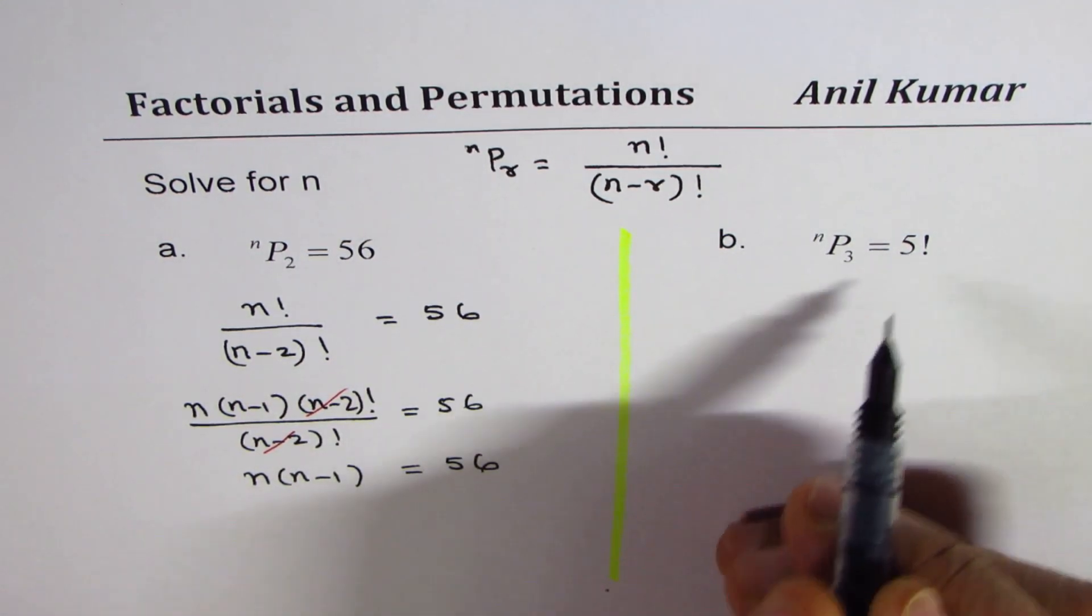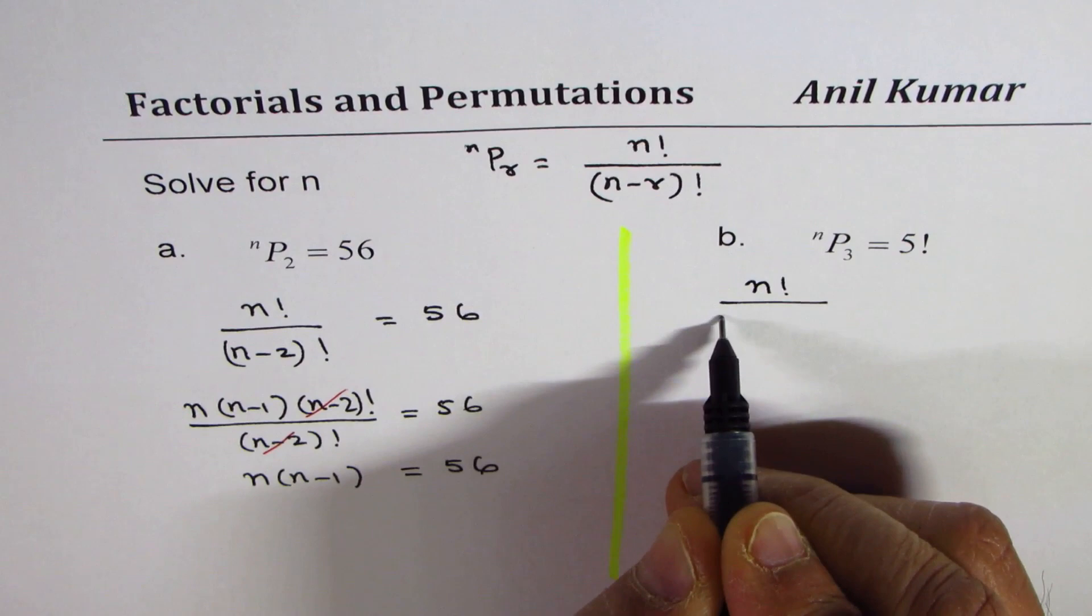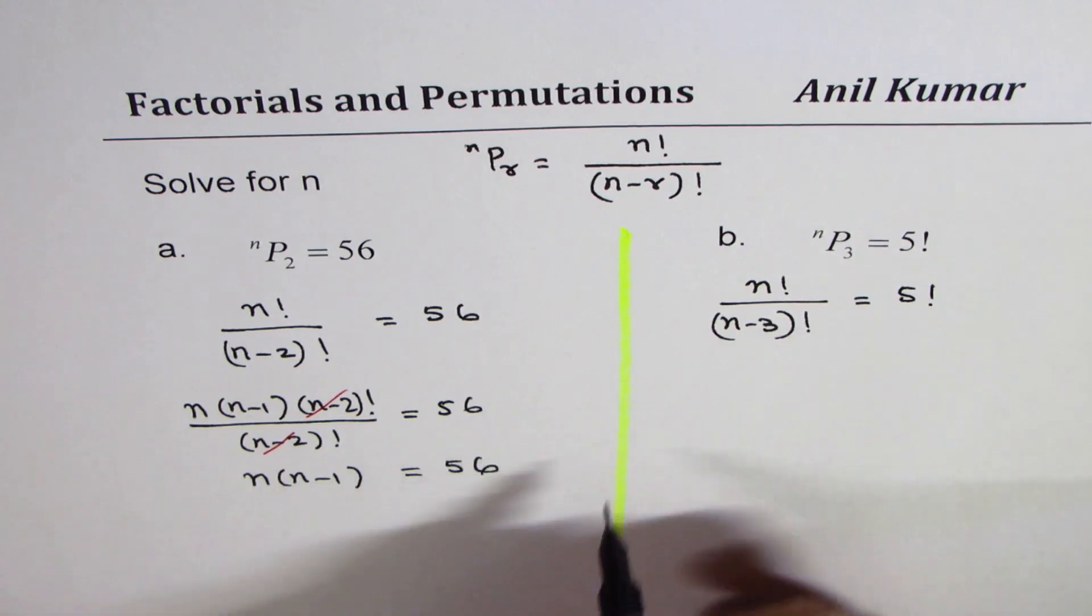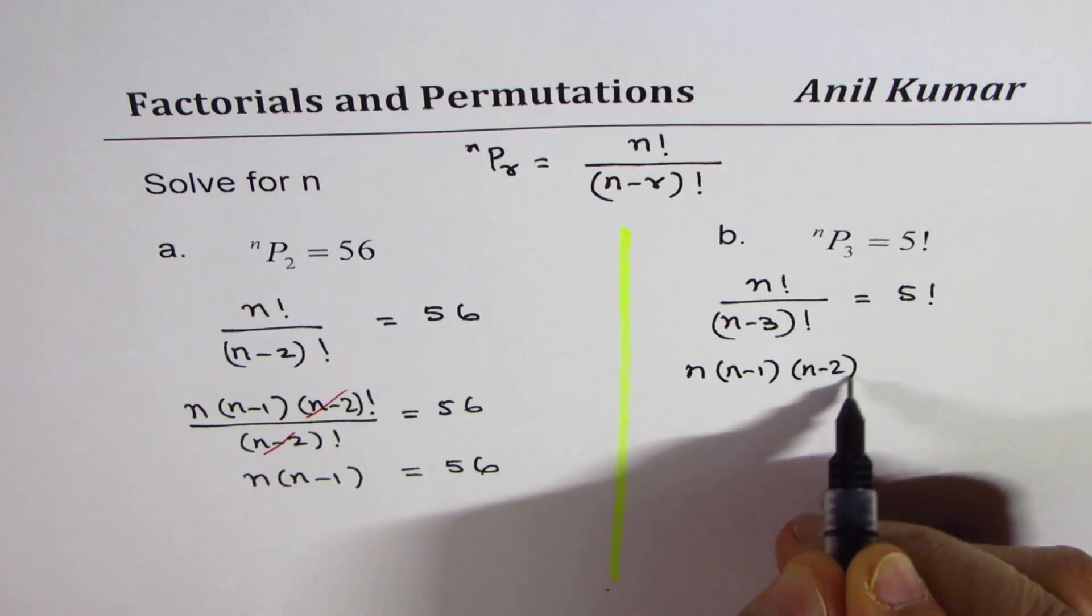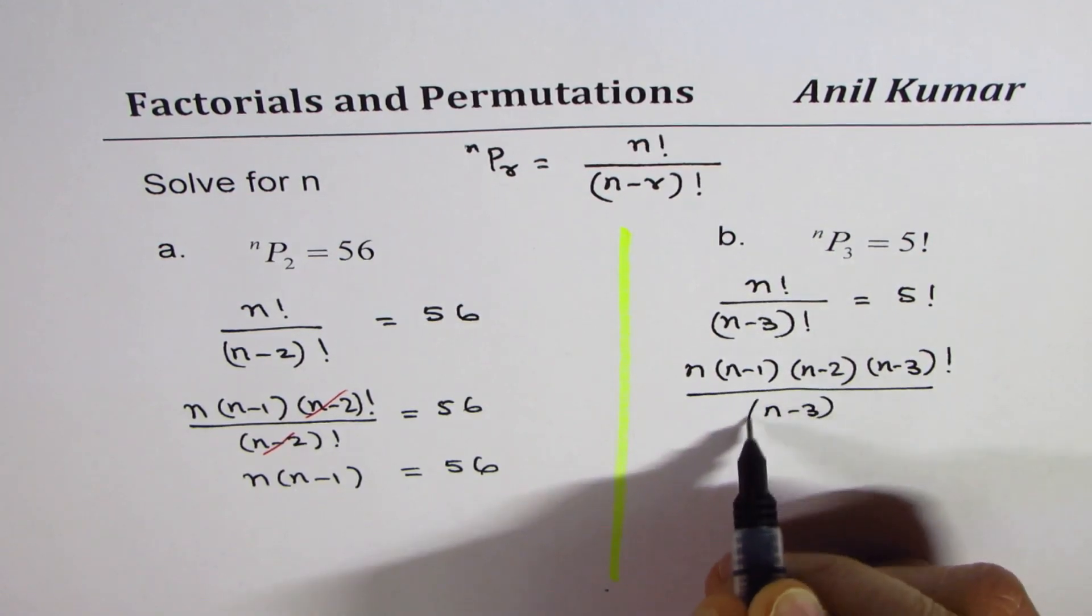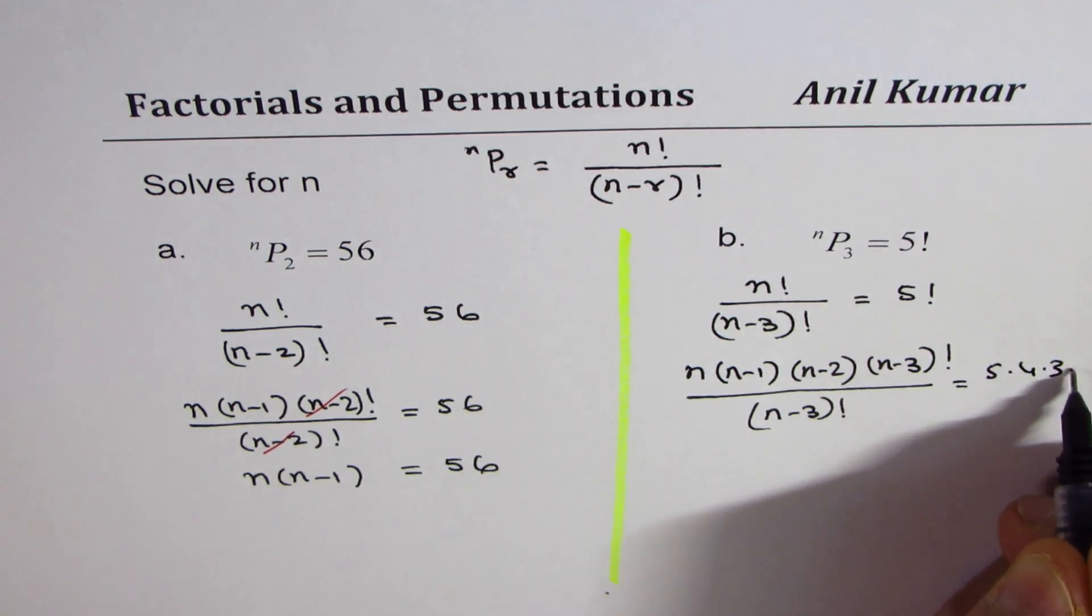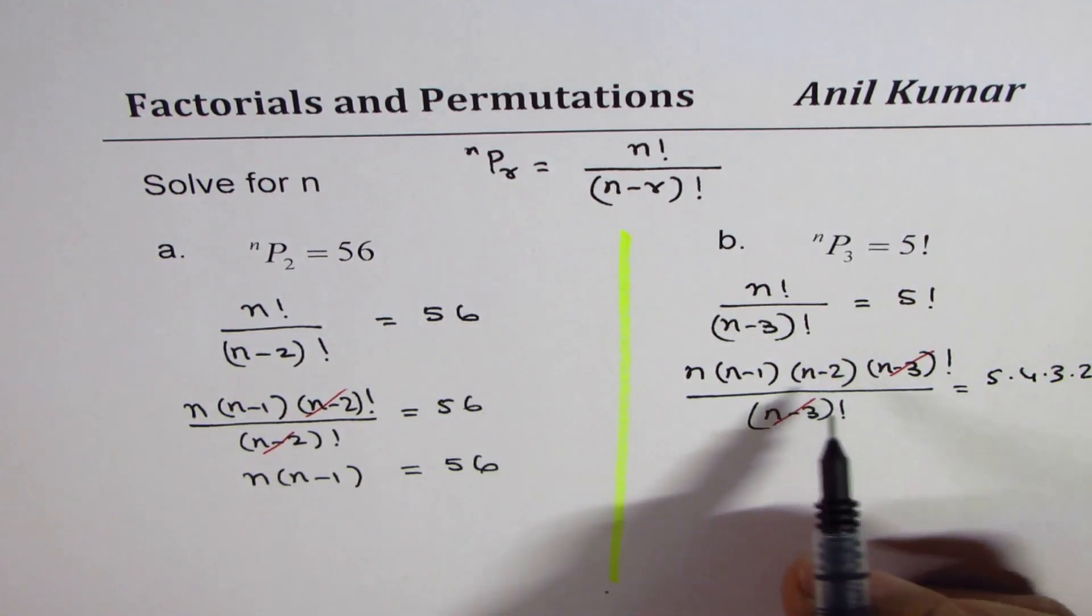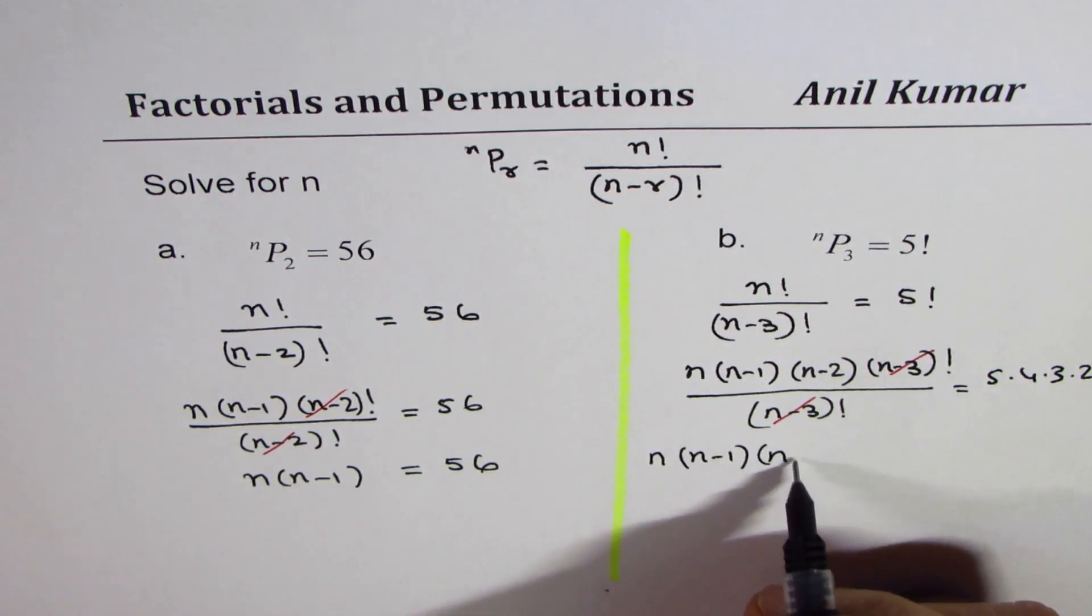Let's look into the second one which gives us nP3 equals to 5 factorial. So that really means we have n factorial over n minus 3 factorial equals to 5 factorial. That means n times n minus 1 times n minus 2 times n minus 3 factorial divided by n minus 3 factorial equals to 5 factorial, which is 5 times 4 times 3 times 2 times 1. Now this cancels, and what really remains with us is a cubic equation: n times n minus 1 times n minus 2.